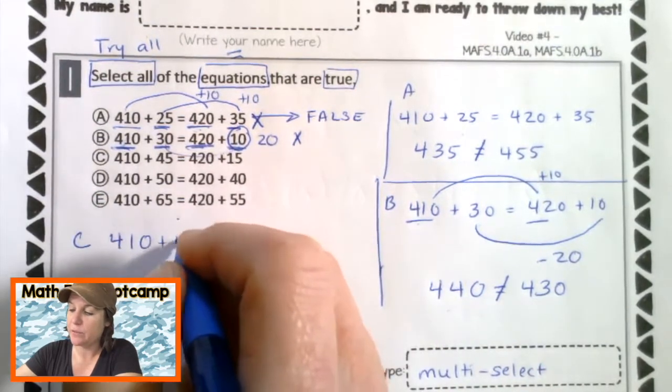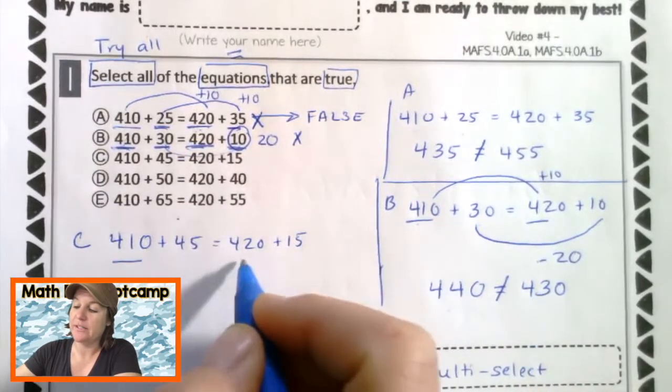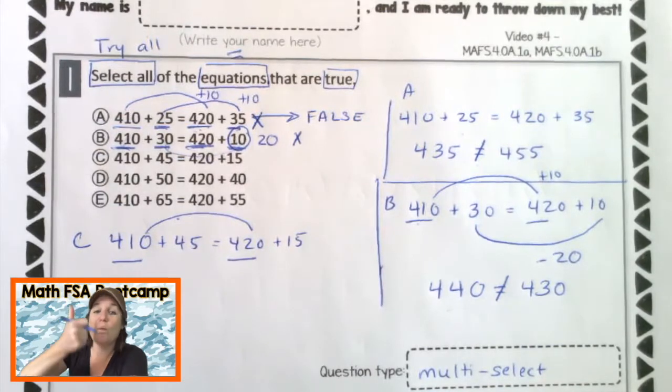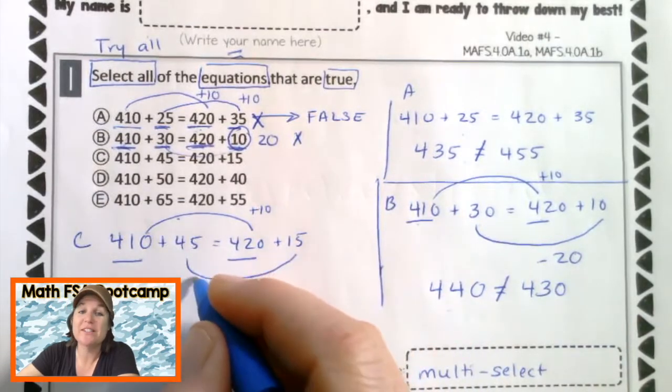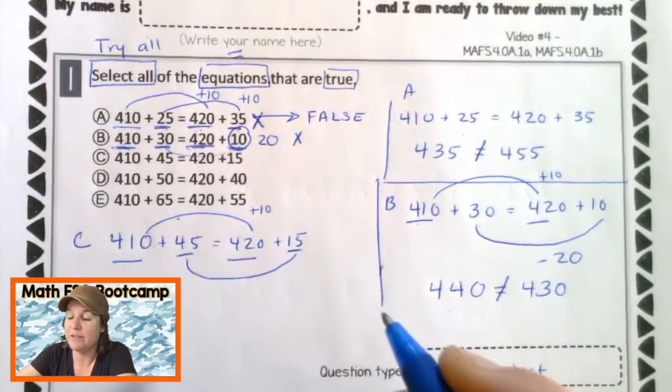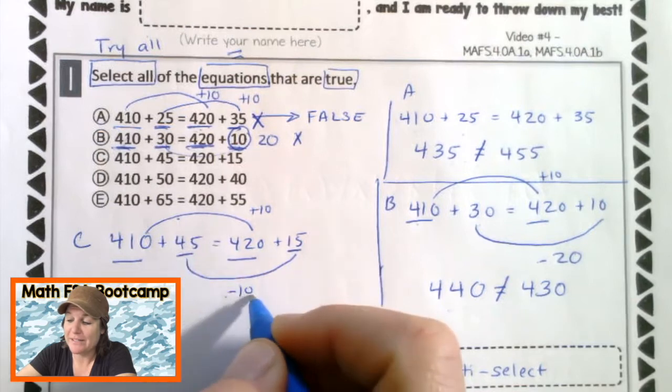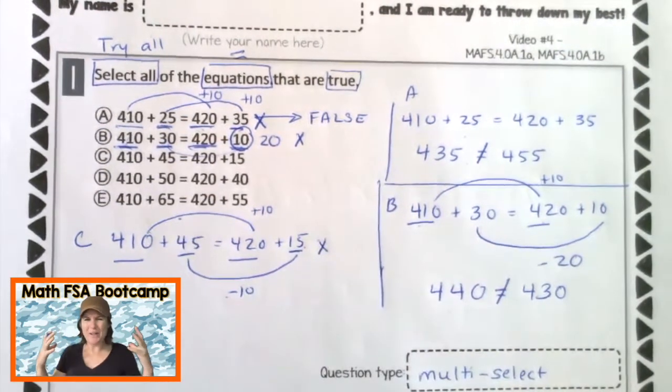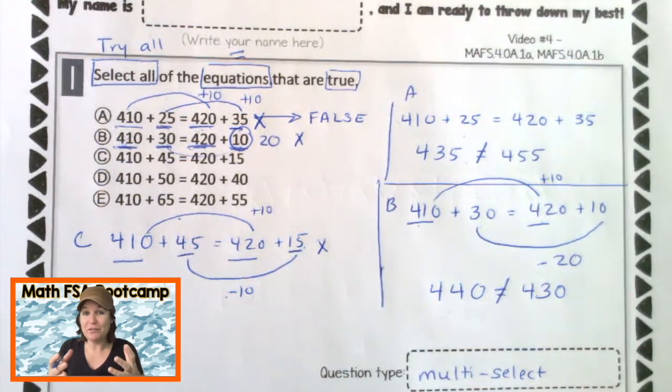Let's take a look at C. We have 410 plus 45 equals 420 plus 15. So let's take a look at what's happening between 410 and 420. We are increasing. We're adding what? 10. So for these to be balanced, we should be subtracting 10 between 45 and 15. 45 and 15 though is not, 45 minus 10 would give us 35. That's not 35. So we can say this is false.